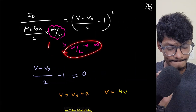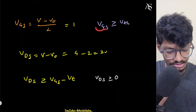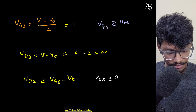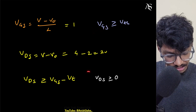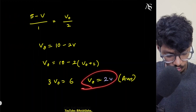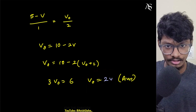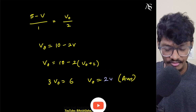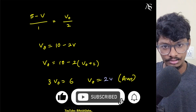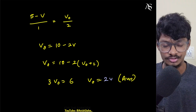So the voltage across the 2 kΩ resistor, Vo, is 2 volts. If you have any doubts, put them in the comments below. If you liked the video, hit the like button and subscribe. I'll bring more interesting questions like this — thank you for watching and see you in the next video.